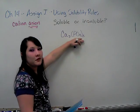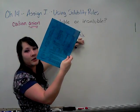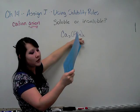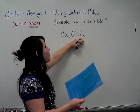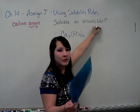The anion is phosphate. You'll look at your solubility rules and rule number six says phosphates are insoluble, so we're going to choose insoluble for this one. They do have some exceptions though.